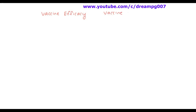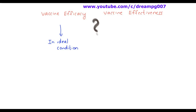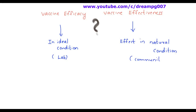Let's have a look at the difference between vaccine efficacy and vaccine effectiveness. Vaccine efficacy is measured under ideal conditions, that is, in laboratory conditions, whereas vaccine effectiveness is the effect of the vaccine in natural conditions, that is, in the community.